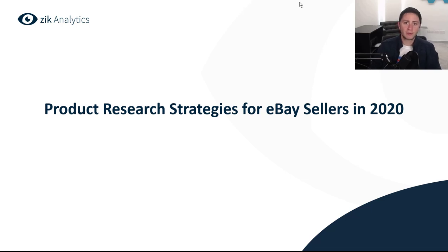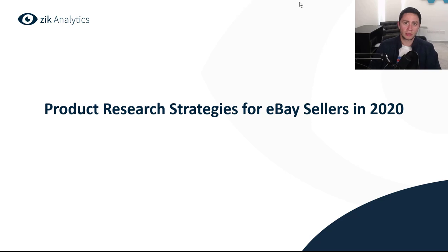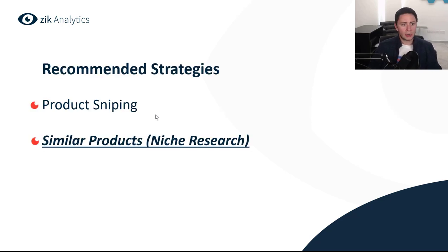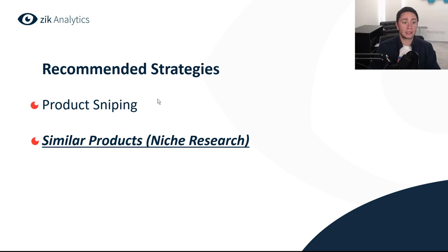Hey everyone, it's Nahar here from Zeek Analytics and in today's video I'll be walking you through the two main product research strategies for eBay sellers in 2020. The two main strategies are product sniping, which you all know as competitor research, and the second one is the similar products method where you must use niche research in order to find your selling opportunities.